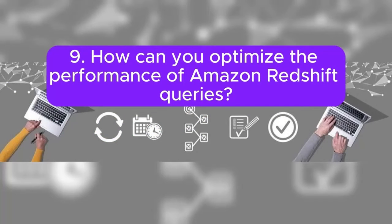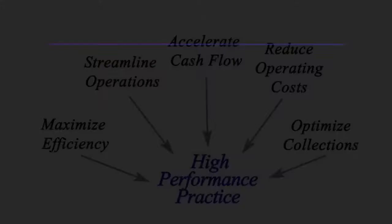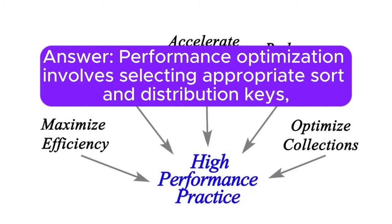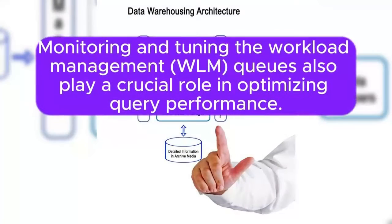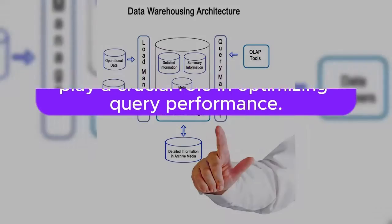Question 9: How can you optimize the performance of Amazon Redshift queries? Answer: Performance optimization involves selecting appropriate sort and distribution keys, maintaining statistics, using proper data types, and regularly vacuuming and analyzing tables. Monitoring and tuning the Workload Management (WLM) queues also play a crucial role in optimizing query performance.